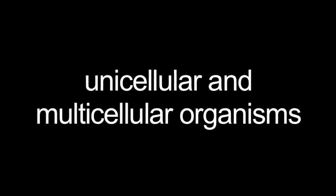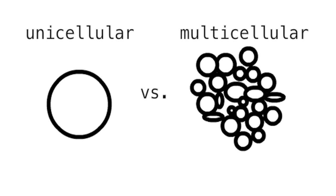Unicellular and multicellular organisms. Unicellular organisms have one cell and multicellular organisms have many cells.